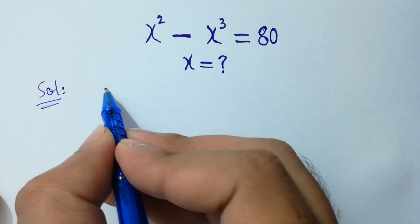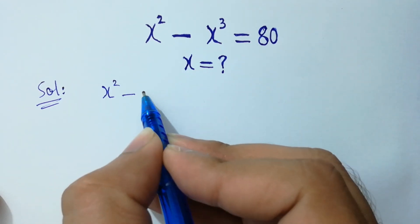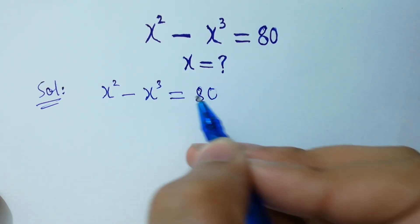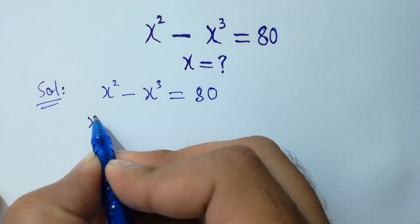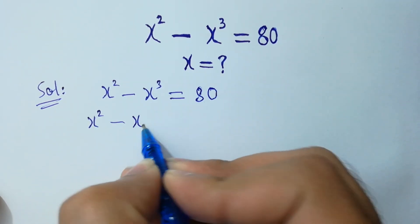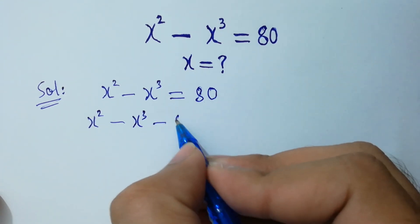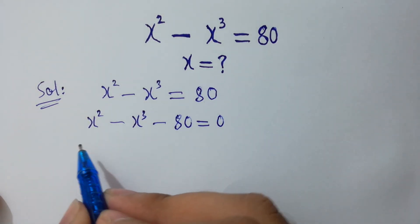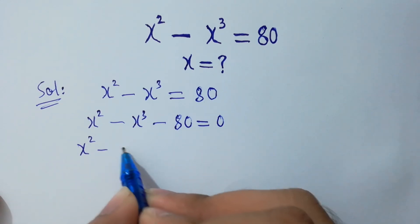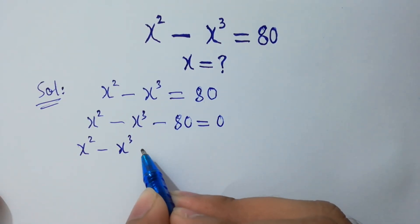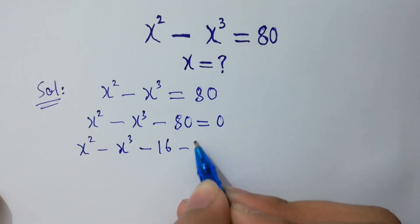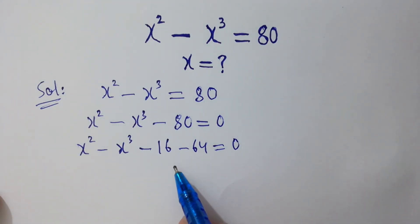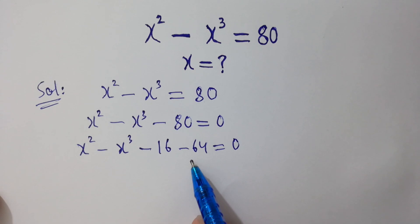x squared minus x cubed equals 80. This gives x squared minus x cubed minus 80 equals 0. We can write 80 as 16 plus 64, so minus 16 minus 64 equals 0, since 16 plus 64 is 80.